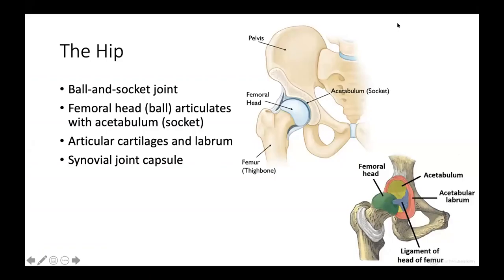The hip itself is a ball and socket joint. It involves the femur, which is the thigh bone and the longest bone in the body, going into the femoral head, and it articulates with the socket, which is the acetabulum, which is part of the pelvis. Inside of that joint is articular cartilage and labrum, and on the outside of the joint is a synovial joint capsule.